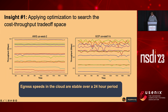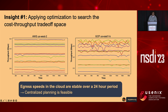One very surprising result we found is that egress speeds between clouds are remarkably stable over a day-to-day period. This trace shows throughput between different pairs of cloud regions leaving AWS and GCP, and over a 24-hour period, the mean throughput is remarkably stable. This means centralized planning is feasible—we can aggregate this throughput information and find efficient overlay routing paths subject to this throughput graph.